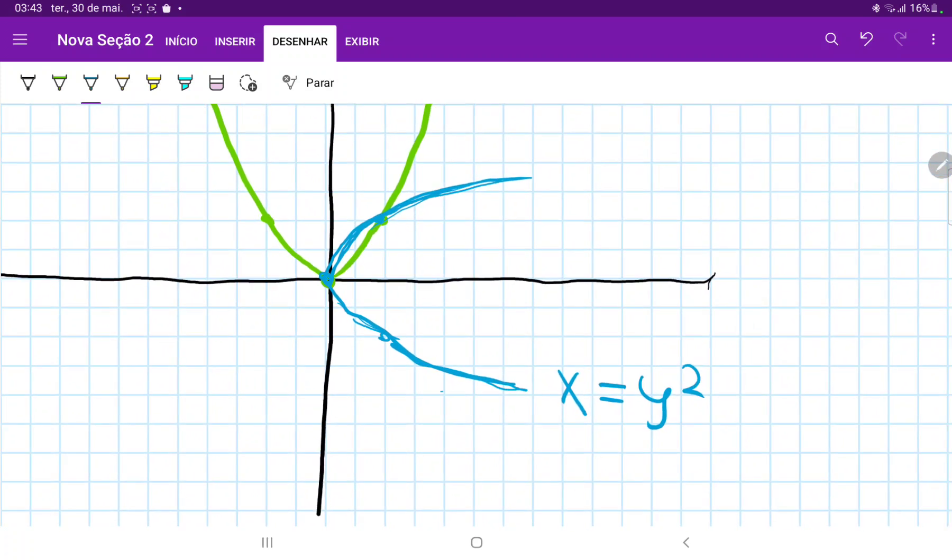So we're going to have to zoom in this pretty nicely because it's just this tiny little area here. And then we're revolving about the line y equals 1. So the line y equals 1 is here.